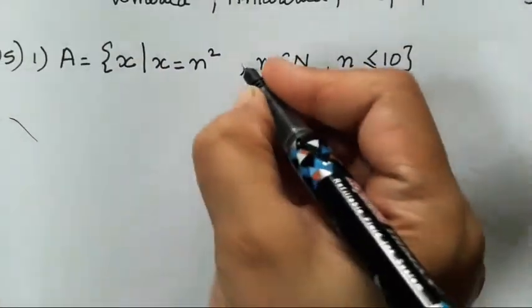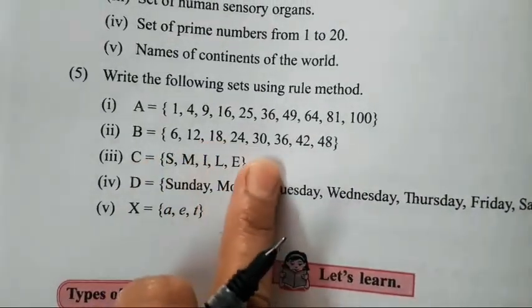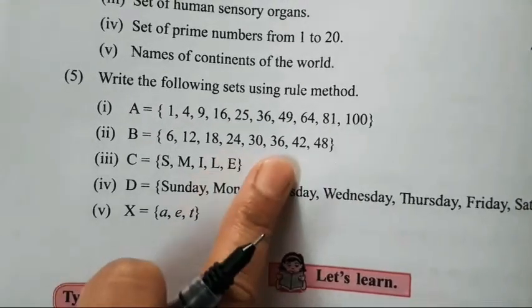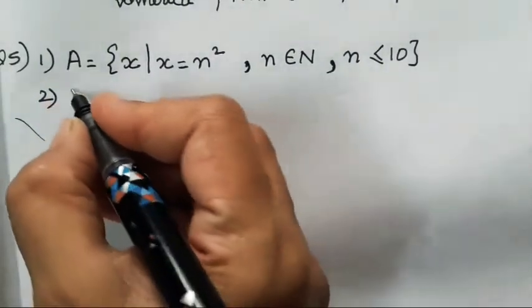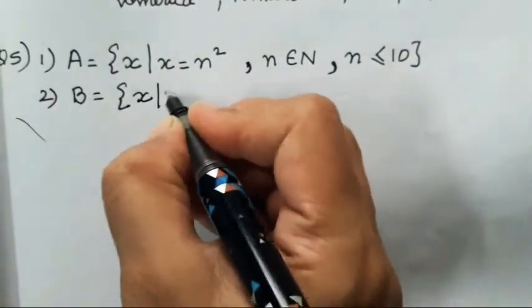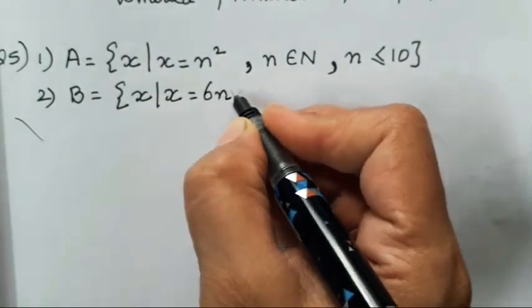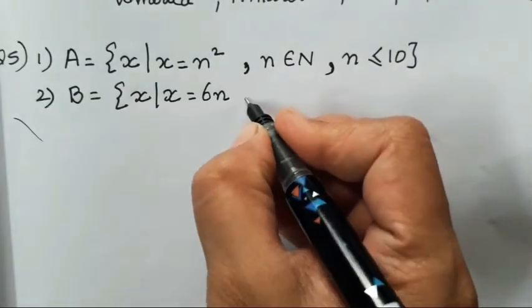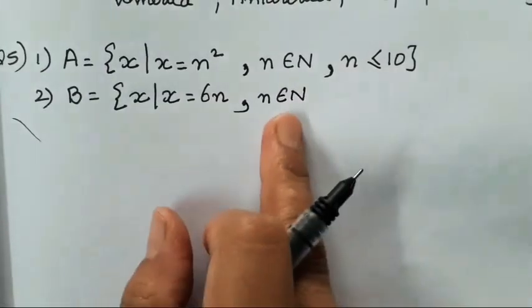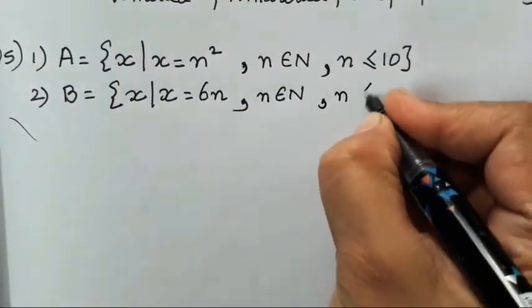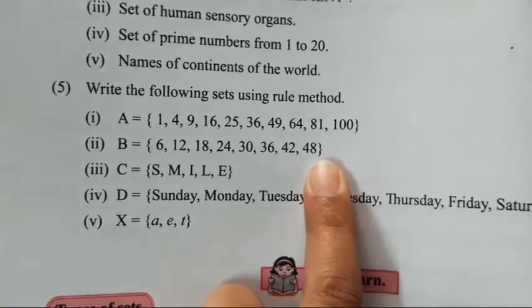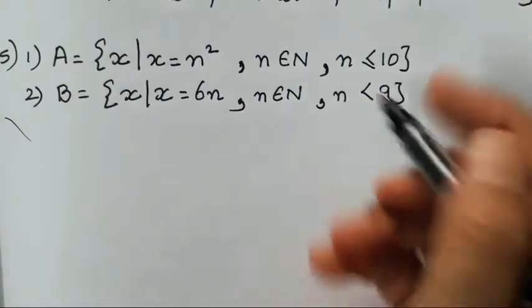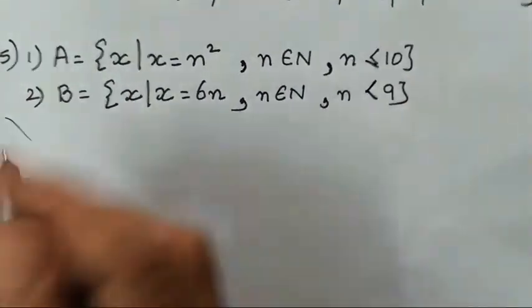The second one is B = {6, 12, 18, 24, 30, ...} — this is the table of 6, so it is 6N. Write: B = {X | X = 6N, where N is an element of all natural numbers and N is less than 9}. Up to 8 only — 6 times 8 is 48. 9 is not counted, so you do not include it. Use the less-than sign, not less-than-or-equal-to.